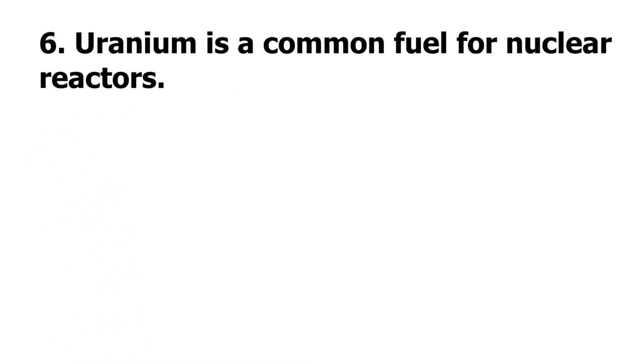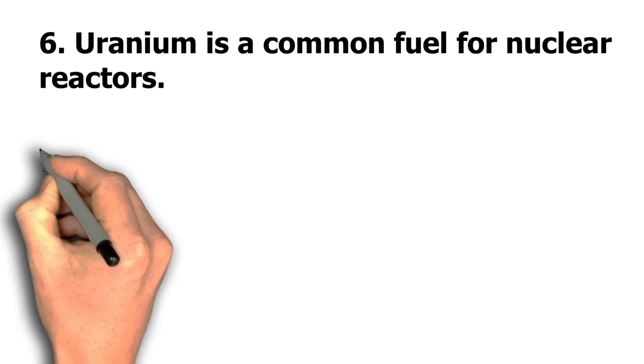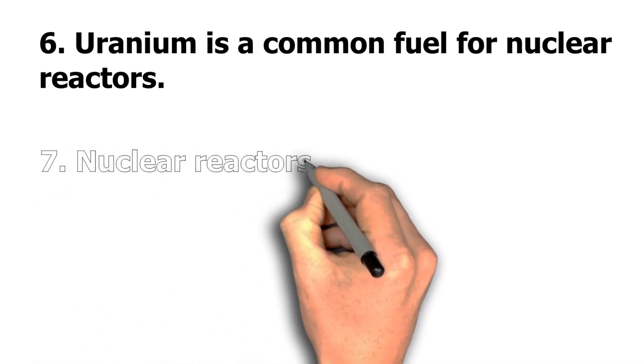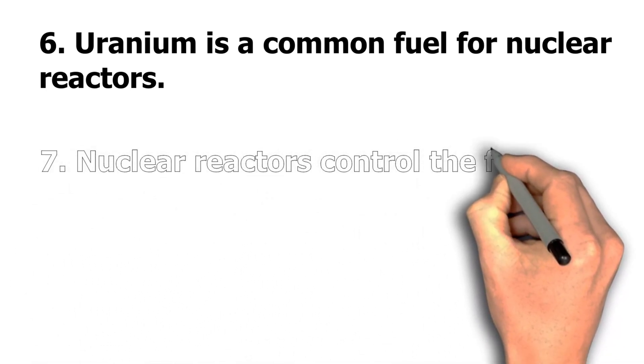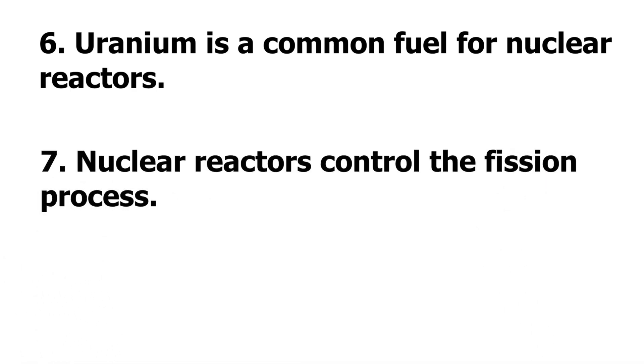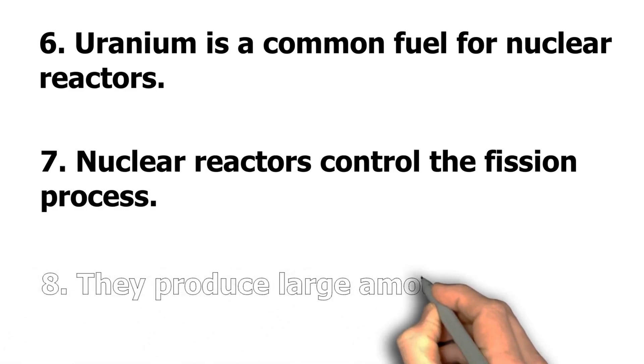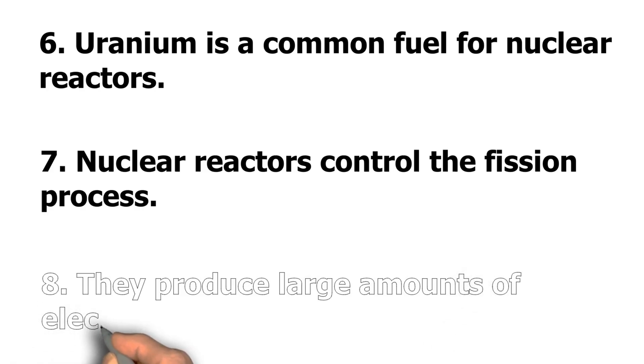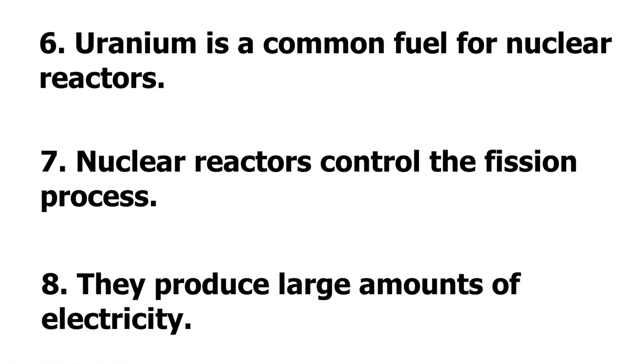Number 6: Uranium is a common fuel for nuclear reactors. Number 7: Nuclear reactors control the fusion process. Number 8: They produce large amounts of electricity.